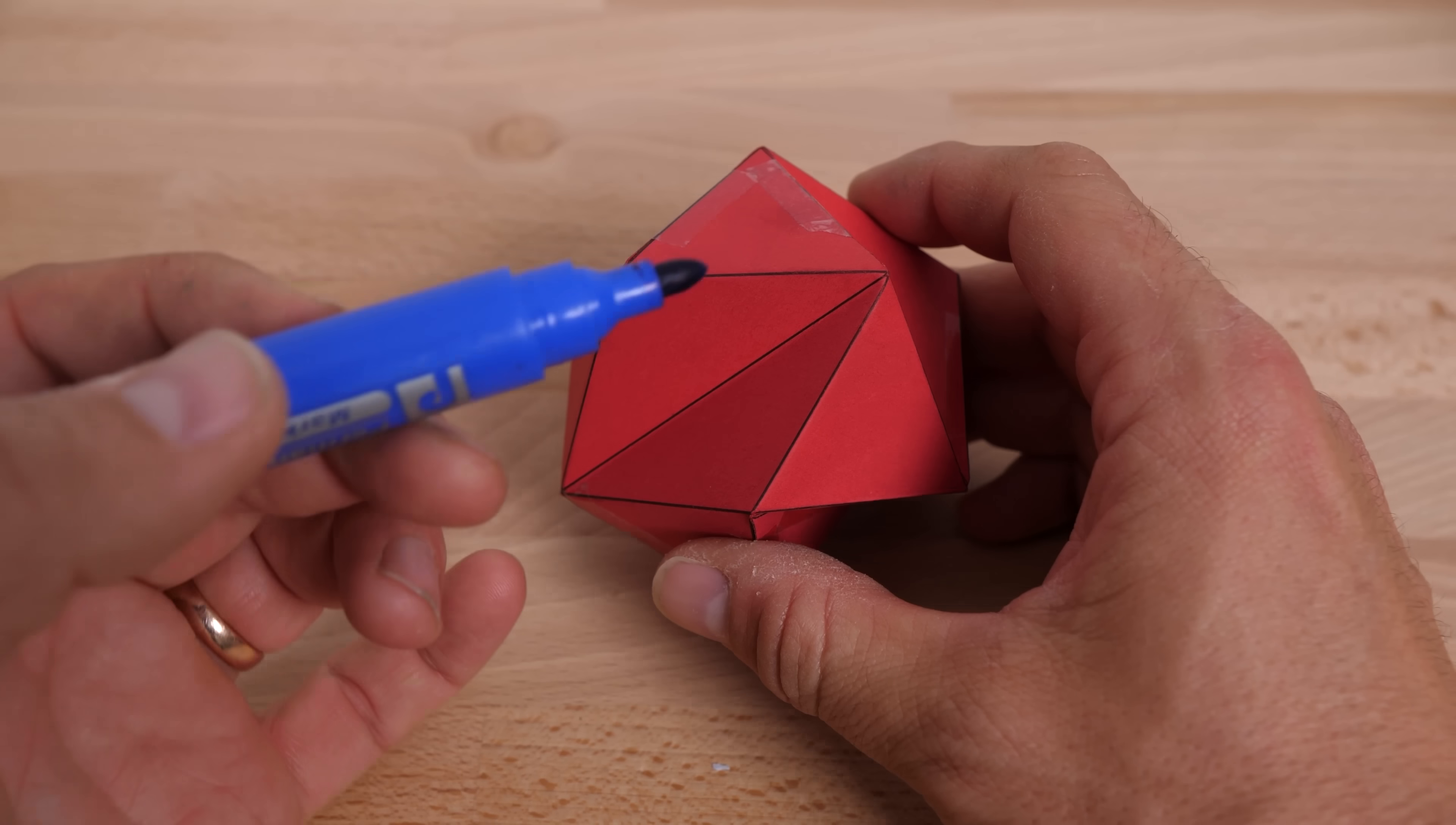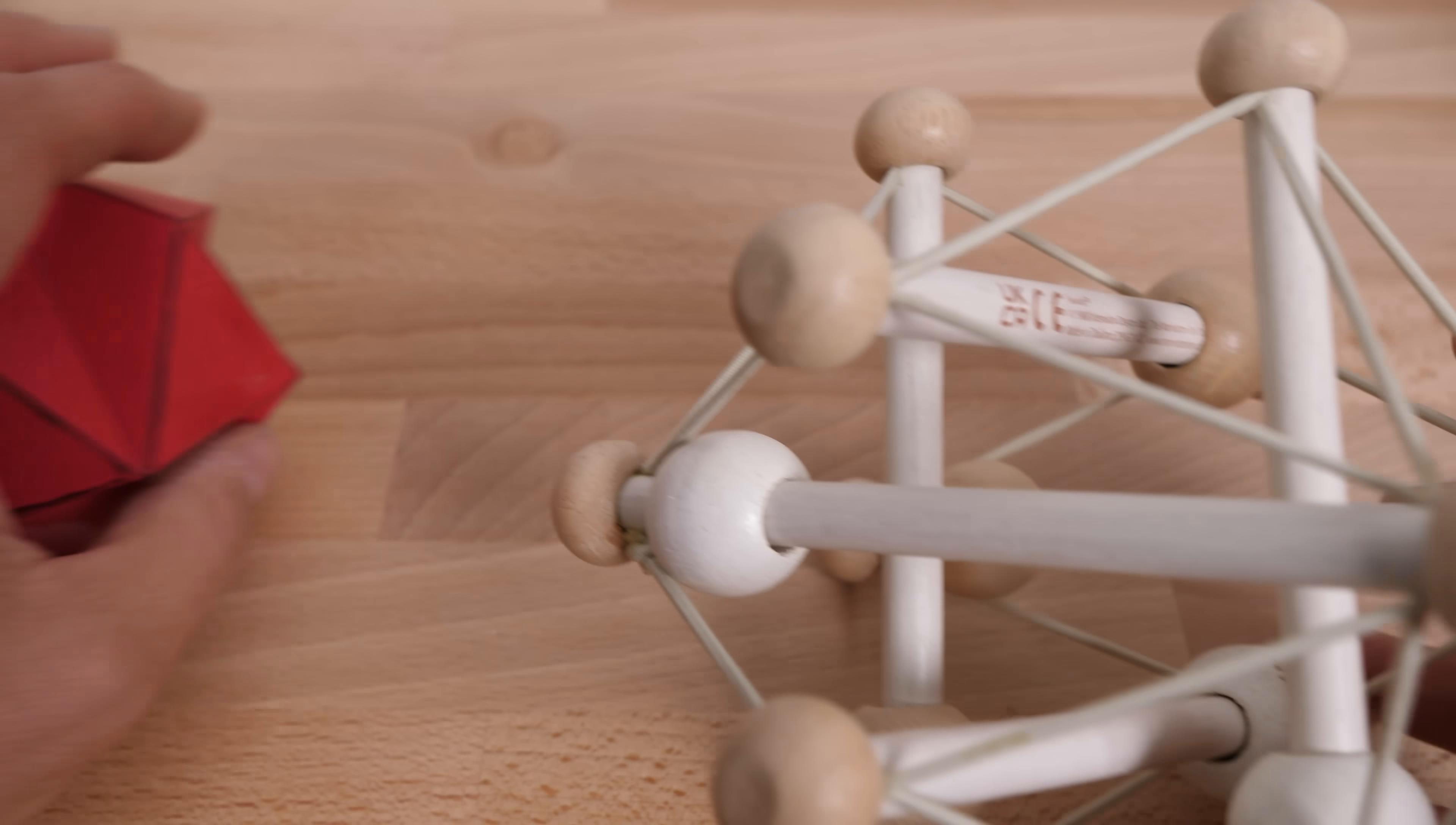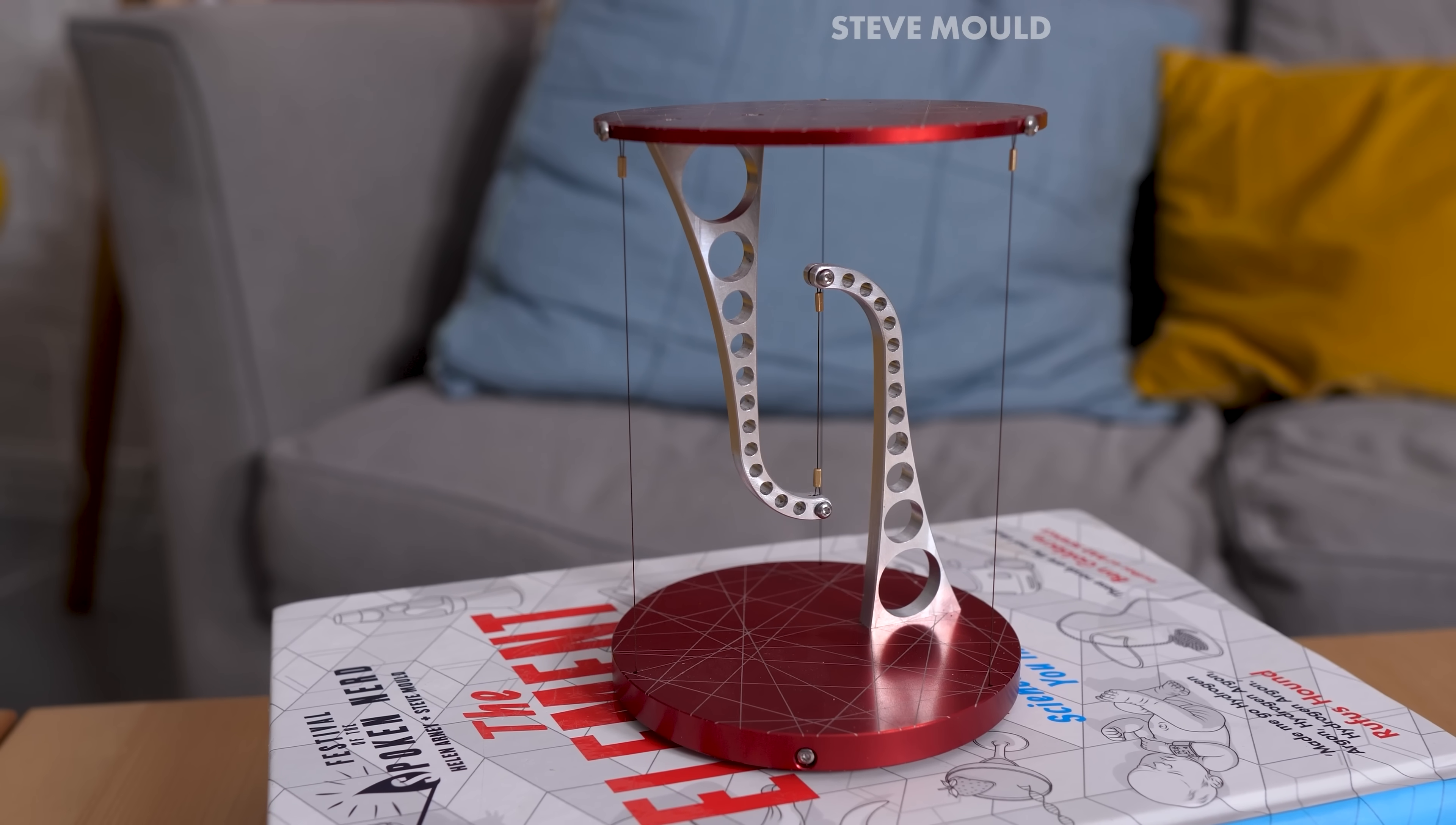That's because Connolly proved that the volume of a flexible polyhedron doesn't change as the polyhedron flexes. It's called the bellows conjecture because a polyhedron cannot be used as bellows. By the way, if you replace all the concave edges with rods and all the convex edges with strings, you end up with this tensegrity structure. That's pretty cool, isn't it? I made a whole video about tensegrity structures, linked to that in the card and the description.